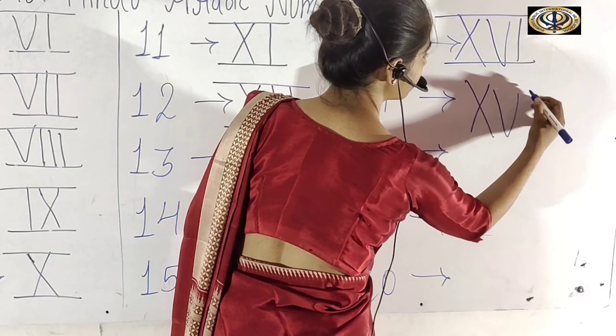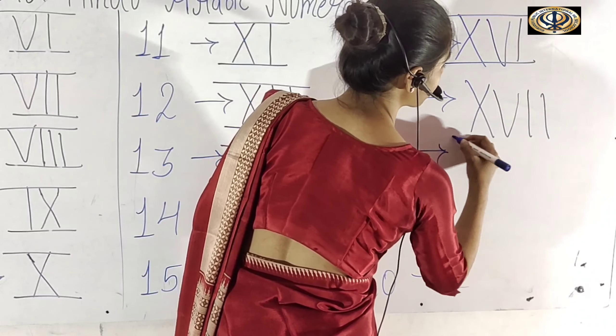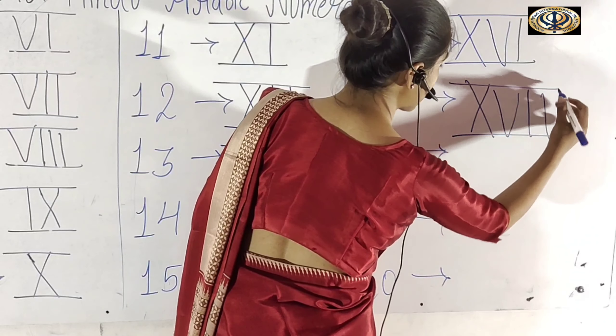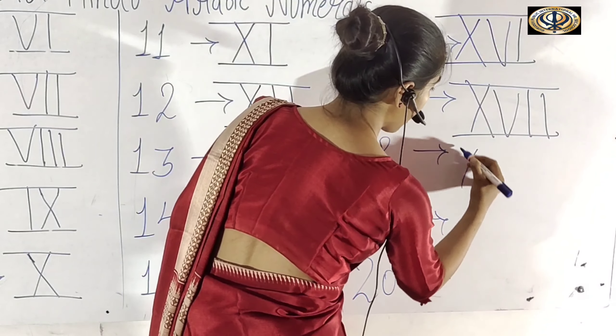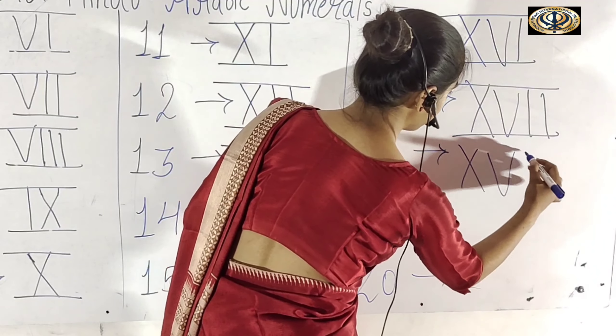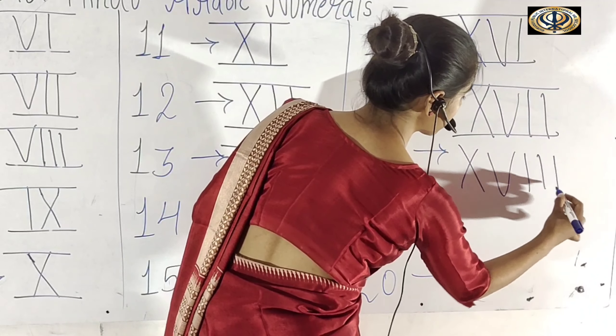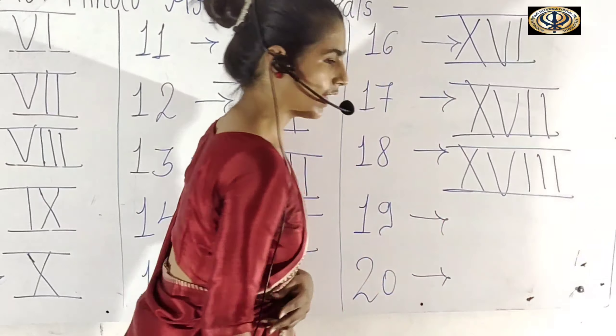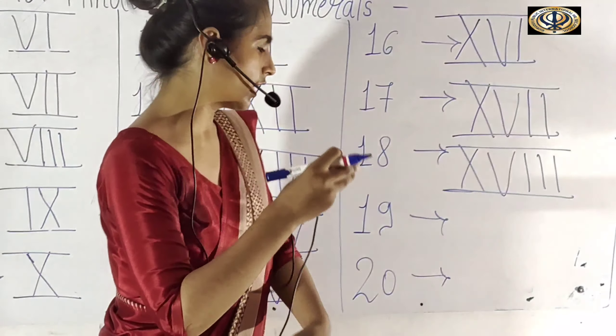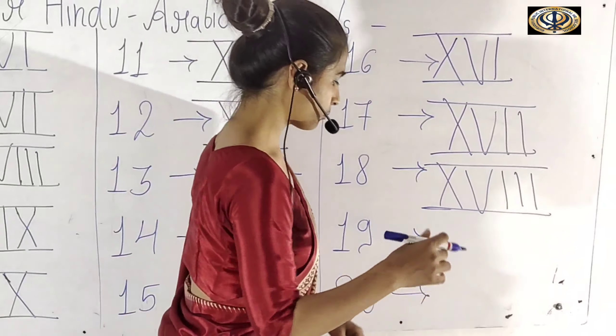16 ka Roman number XVI. 17 ka Roman number XV double I — XVII. Kiska ho gaya? 17. XV triple I — XVIII. Kiska ho gaya? 18. Aur 19 ka kya ho gaya?